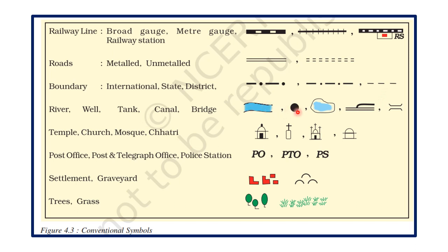River, well, tank or ponds, and canals — these are the symbols used for explaining these water features. Temple, church, mosque, and chhatri are shown by using specific symbols. Some symbols are used on the map by using letters.